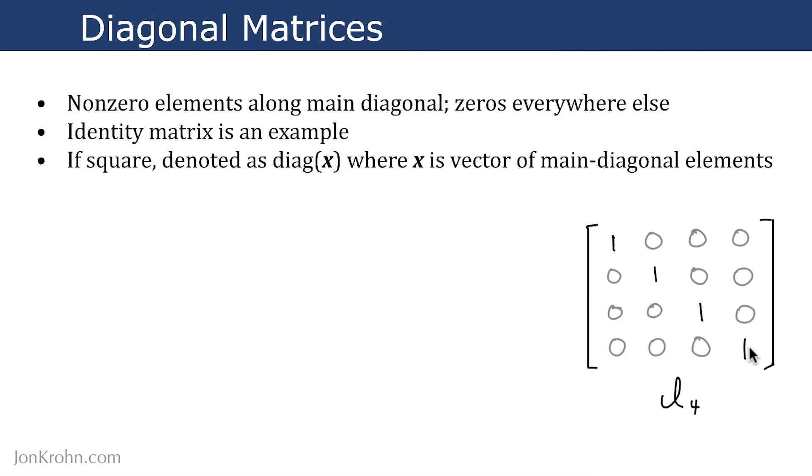If the diagonal matrix is square, we can denote it as diag, open bracket, then a vector, say it is vector x, and close bracket, where that vector x is a vector of the main diagonal elements. Since we know that everything else is going to be zeros, we can represent the entire diagonal matrix with a single vector of the elements along the main diagonal.